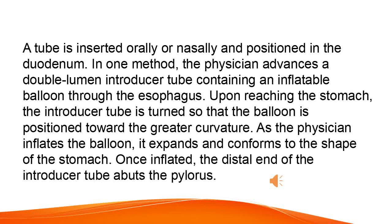A tube is inserted orally or nasally and positioned in the duodenum. In one method, the physician advances a double lumen introducer tube containing an inflatable balloon through the esophagus. Upon reaching the stomach, the introducer tube is turned so that the balloon is positioned toward the greater curvature. As the physician inflates the balloon, it expands and conforms to the shape of the stomach. Once inflated, the distal end of the introducer tube abuts the pylorus.